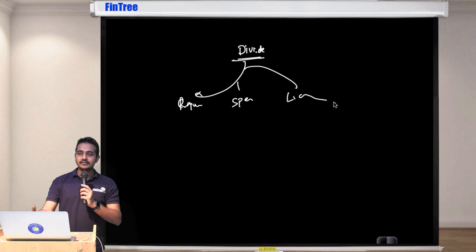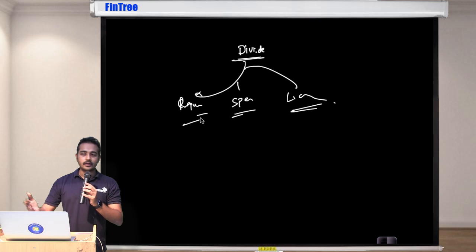So regular dividend is what you pay regularly and special dividend is if you have a one-time large cash flow then you want to pass it on to the shareholders but also want to tell them that don't expect this next year, then you would call this a bonus dividend or special dividend. And liquidating is when company has liquidity and it is paying off in parts.